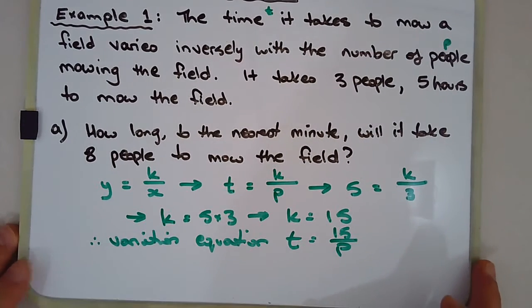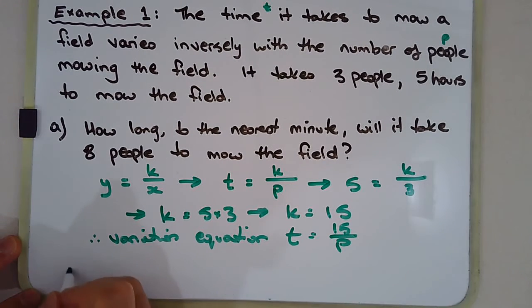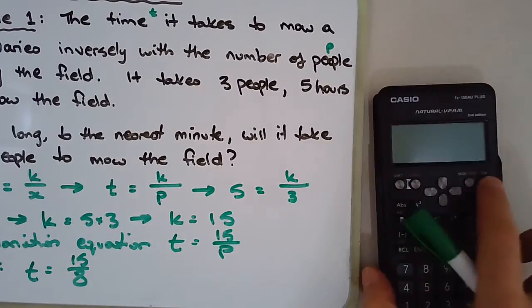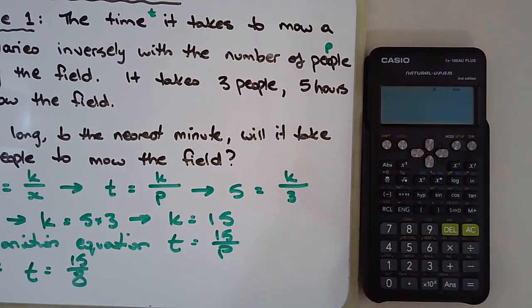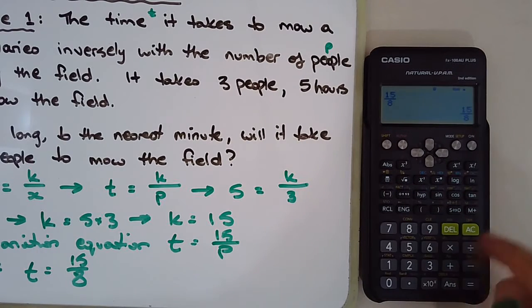So we can now answer this question directly. How long to the nearest minute will it take eight people to mow the field? So we'll just see if P is equal to eight. T is equal to 15 over eight. And that's T in hours. So 15 over eight, press equals to 1.875 hours.